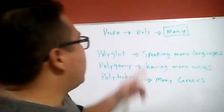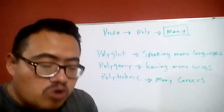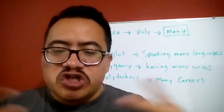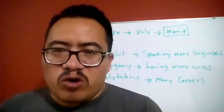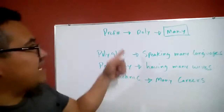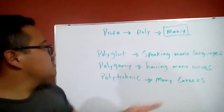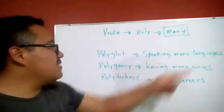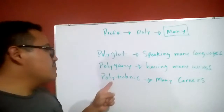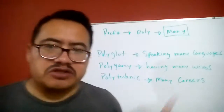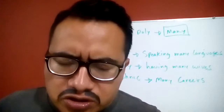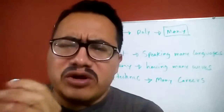Once again, I hope you liked it. Remember, don't try to memorize a bunch of words — use shortcuts, 'atajos.' So: 'poly' means many. Polyglot — speaking many languages. Polygamy — having many wives. Polytechnic — many careers or many options.